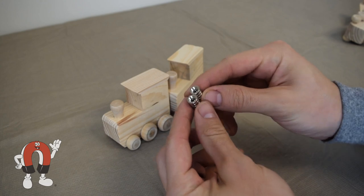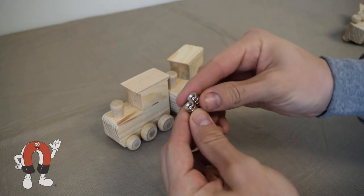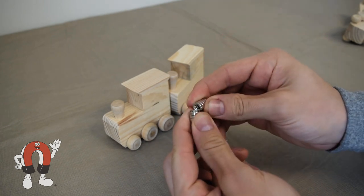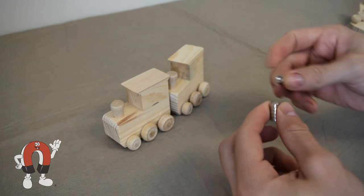How could we attach these trains magnetically? Our first thought was to use some countersunk magnets. These are magnets that accept screws which will make it quick and easy to attach to the trains.